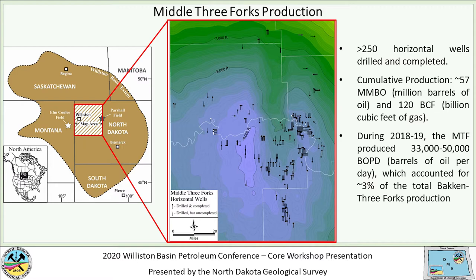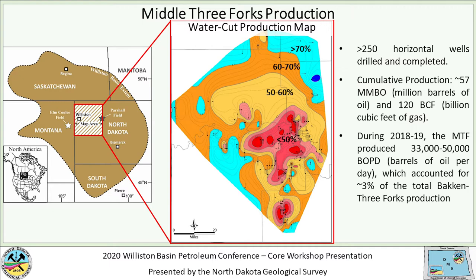This next slide shows a water cut map looking at the percentage of water produced out of total fluids from middle Three Forks horizontal wells. Initial flowback of injected frack fluids was removed from this calculation. The blue areas on the outer portions represent where production is 70% or more water. The red areas in the central portions represent where water cut drops below 50% and oil production climbs above 50%. Most horizontal wells in the middle Three Forks are positioned in and around that low water cut, high oil yield area.